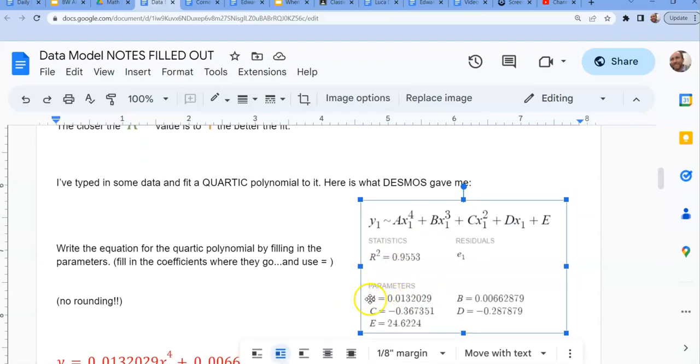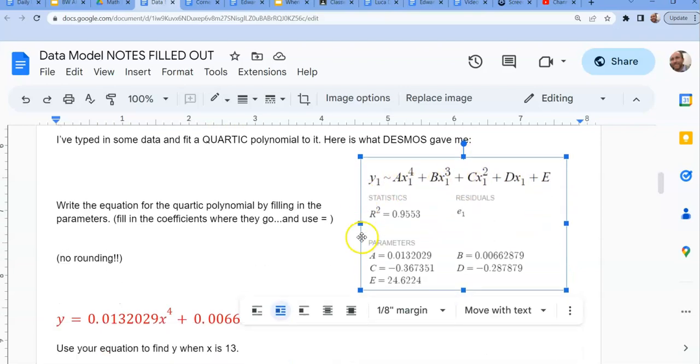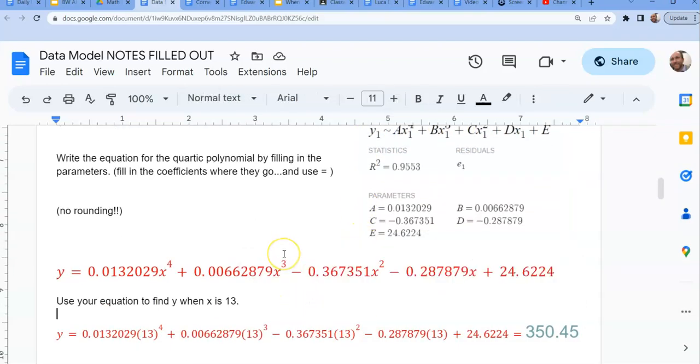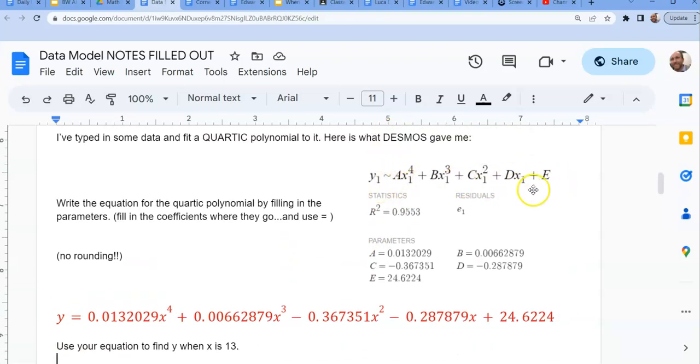What I'm saying right here is take A, B, C, and D from down here, those coefficients, and put them where they belong for A, B, C, and D in this formula. Notice though, when I write this formula right here in red, there are no more ones. y₁, x₁, that stuff is gone. The tilde is gone. It's an equal sign. Those ones and that tilde is Desmos language.